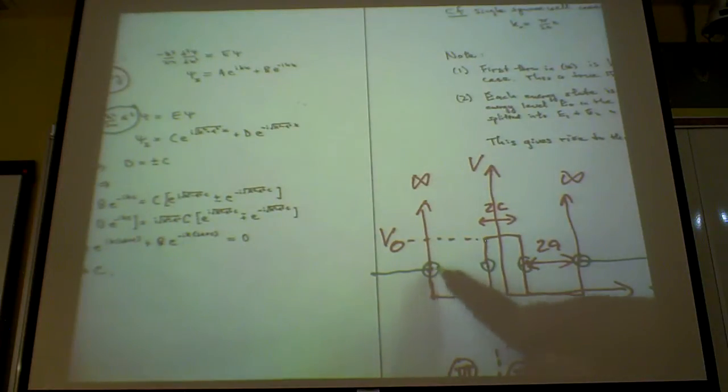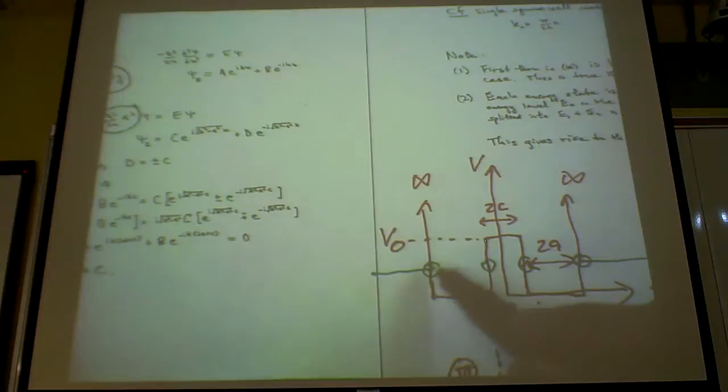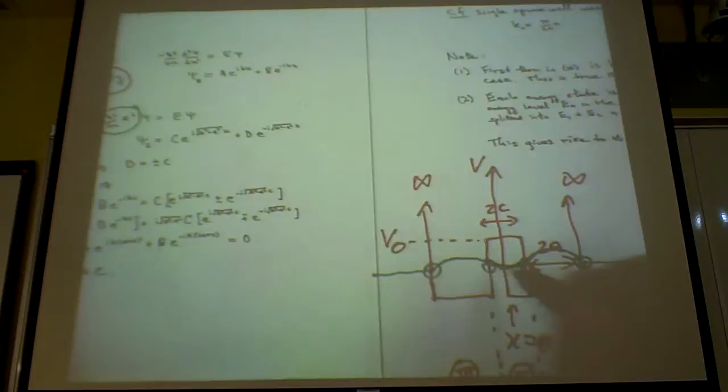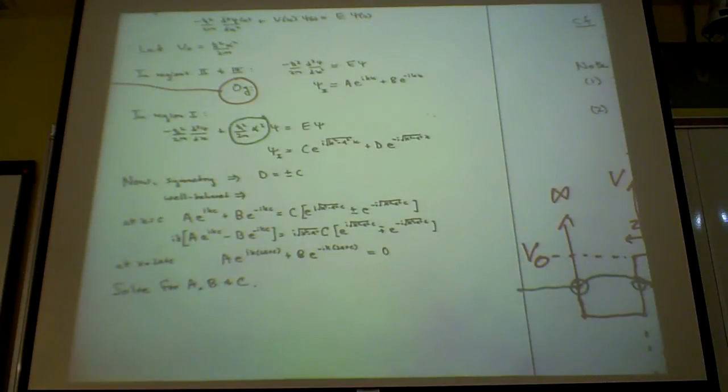Inside the square well, you would expect some sort of standing wave just like a single square well, but in here you would have some termination. So you would have a little tail penetrating into this region. That's the picture for this sort of boundary condition.